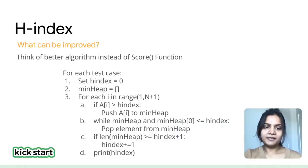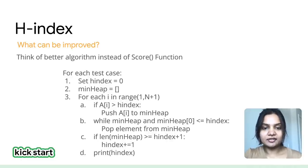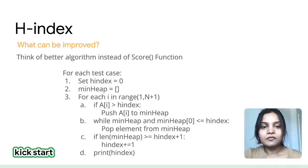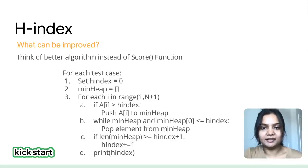Now let's think about a more optimized approach. Think of an algorithm that could improve the score function. One important thing to note is that once we have a certain H-Index, we don't need to keep papers with citation values less than the current H-Index. So we need a data structure that stores citations in some order as we receive them and also allows us to remove citations easily. We can use a min heap for that. Once you have come up with a better approach, follow the same steps: write pseudocode, execute a dry run, and when satisfied, start implementing.